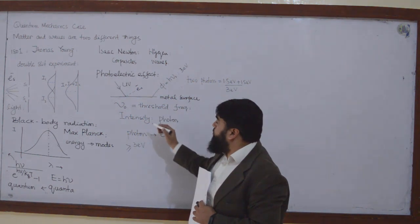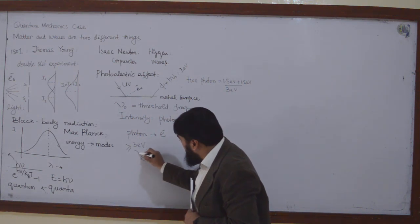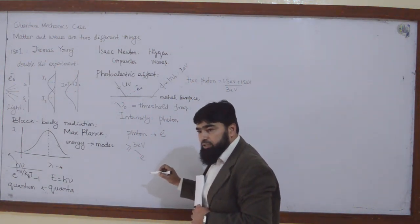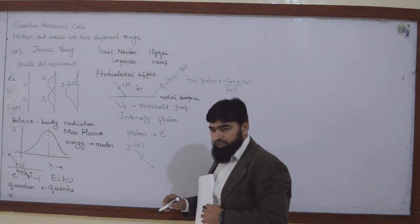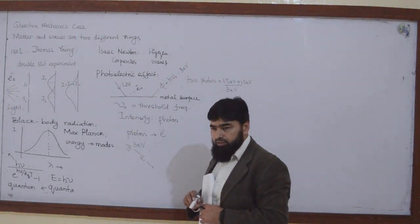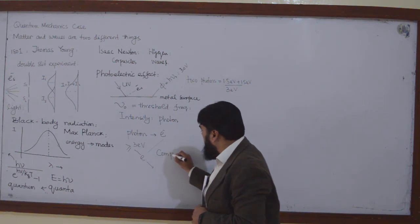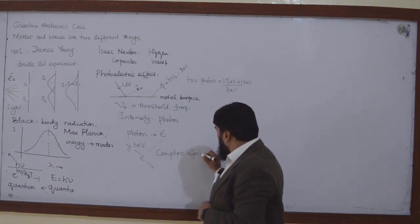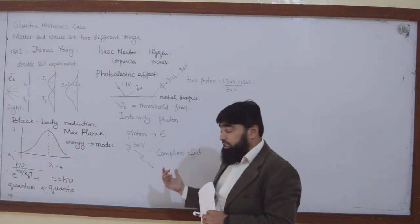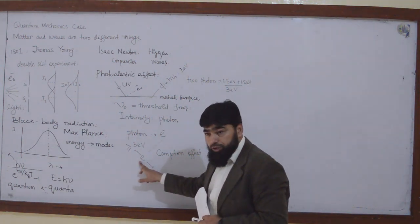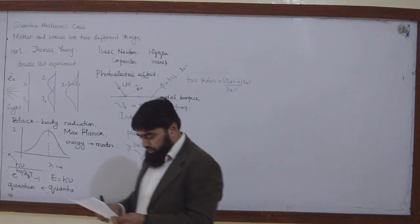There was another scenario: when a photon comes in and hits an electron but does not eject it out of the metal surface — it only displaces it and then travels away at some angle. This was addressed in the Compton effect. When the electron is ejected, it is the photoelectric effect; when it is not ejected but the photon gives some energy to it and scatters at an angle, that is the Compton effect.